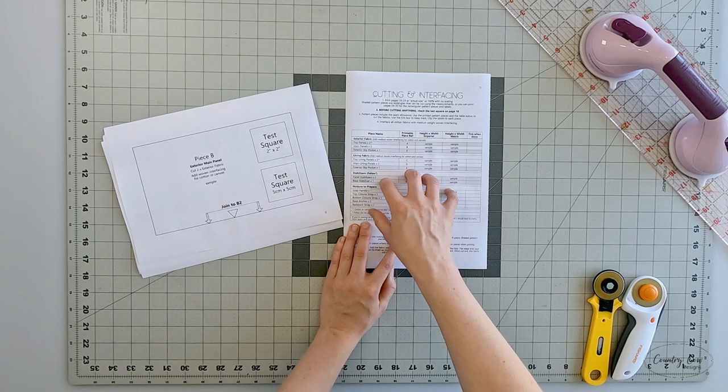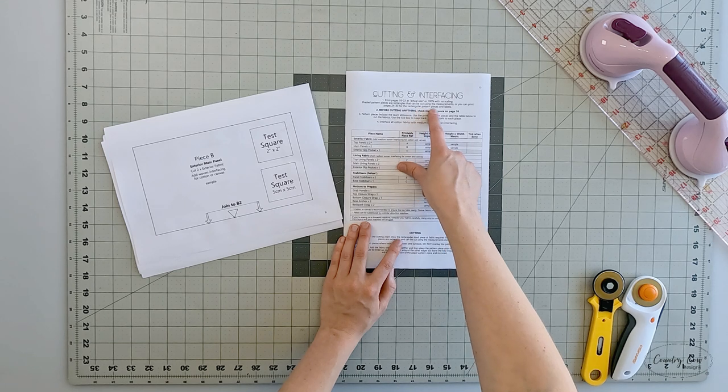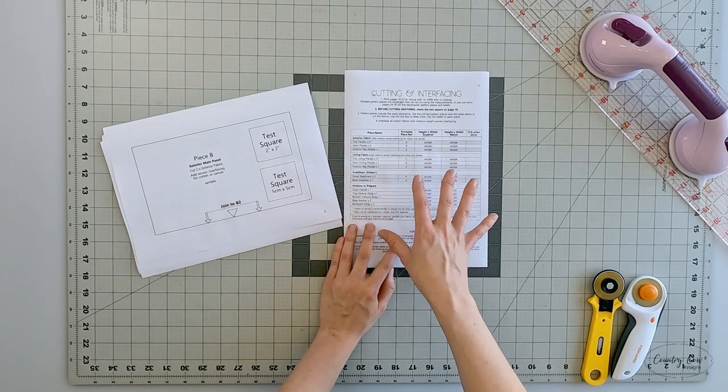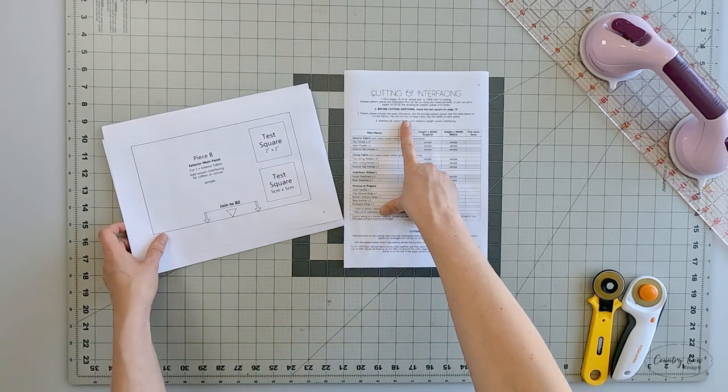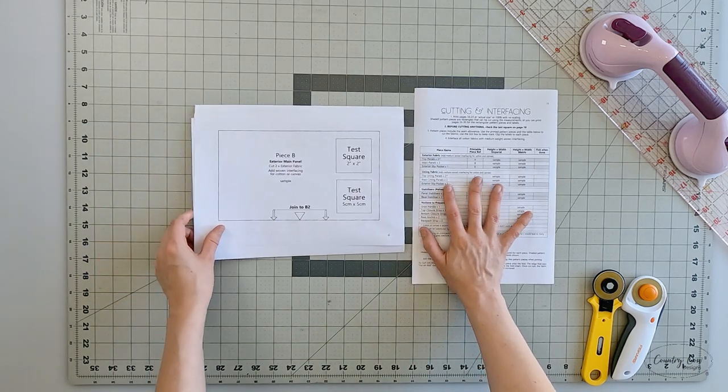If you want to print the rectangular pattern pieces, just pay attention to this bit here. It will tell you which pages to print for rectangular pattern pieces, because we're aware that some people do prefer to print the rectangles too. All of your pattern pieces include seam allowances and you can use this cutting chart as a guide.